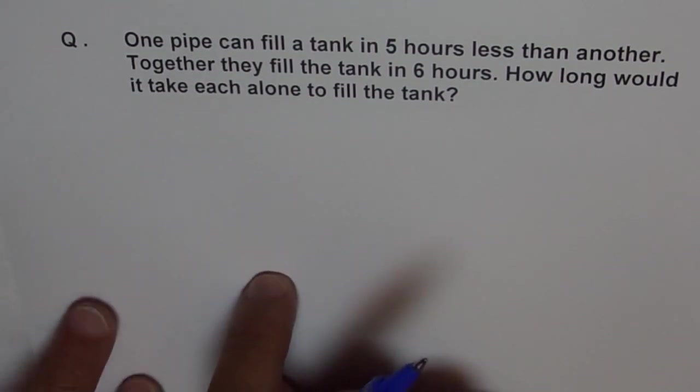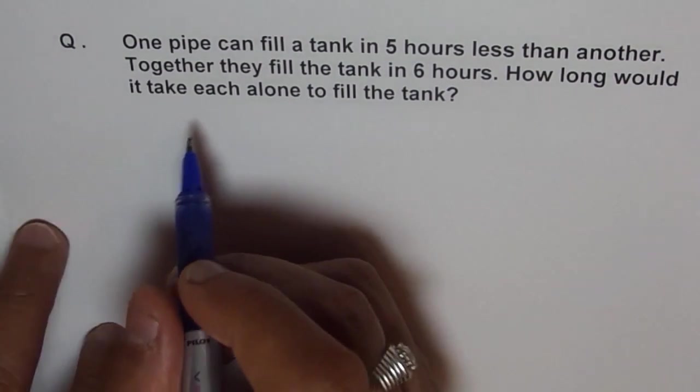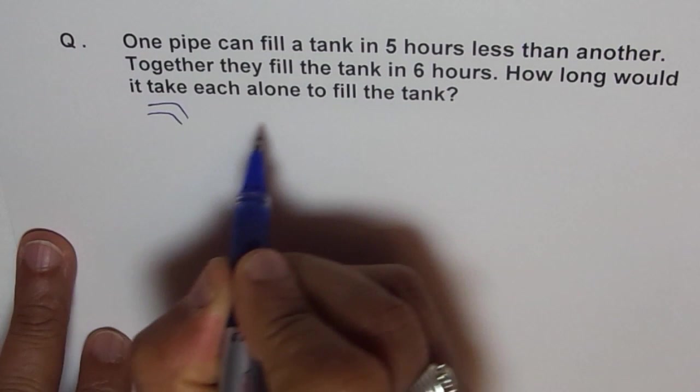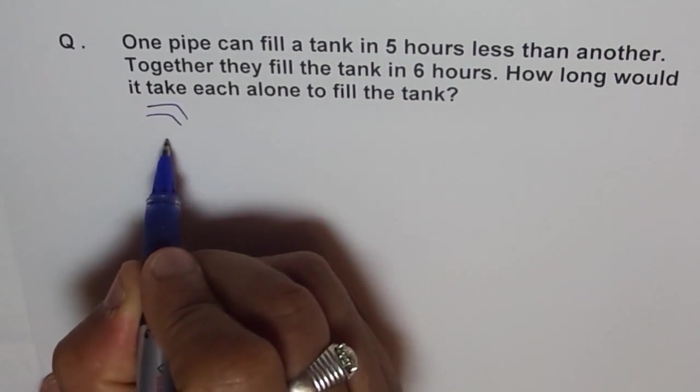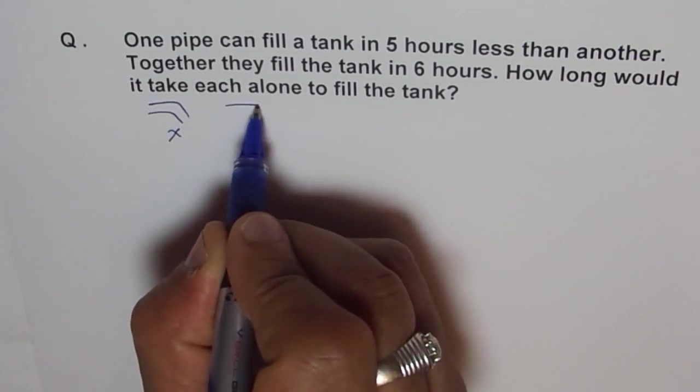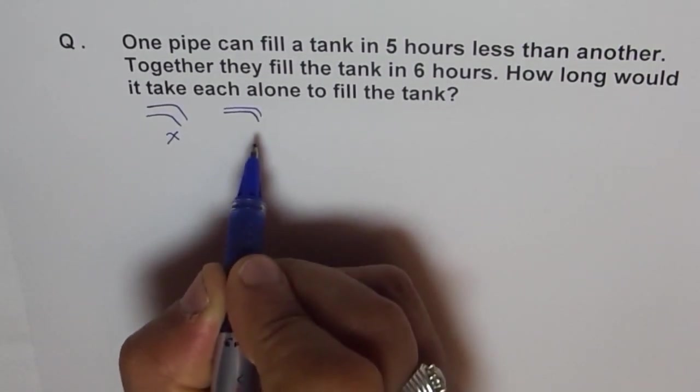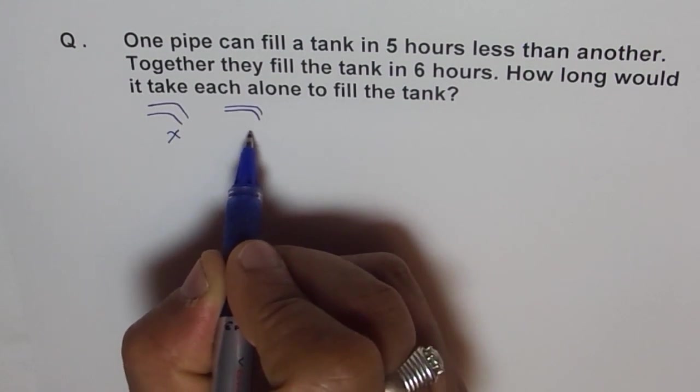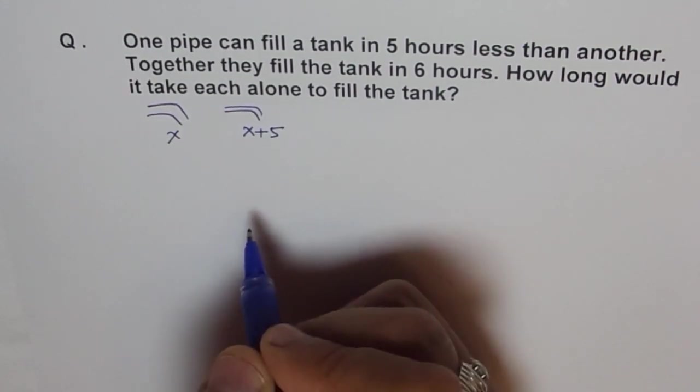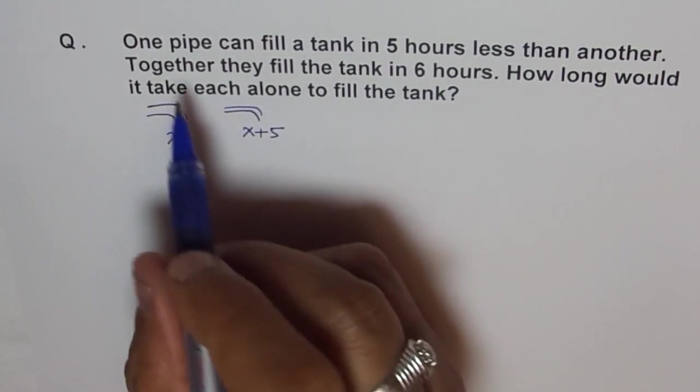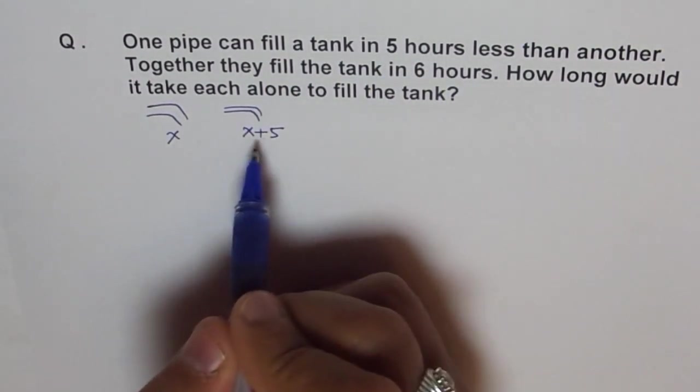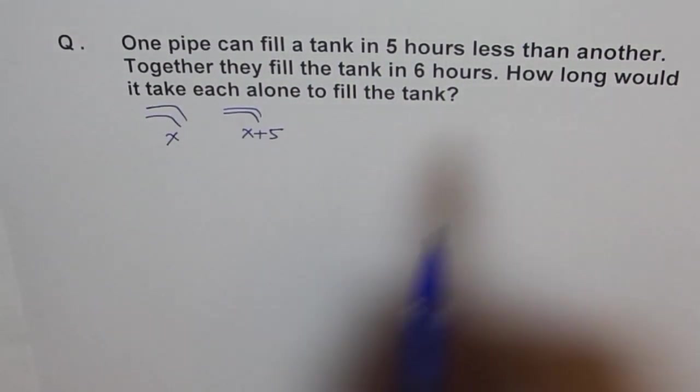Now let's define our pipes. Let's say this is one pipe and the speed with which this fills is x. And then we have a narrower pipe, and the speed - it takes more time - so x plus five time it takes to fill the whole tank. So one pipe can fill the tank in five hours less, this is five hours less than this.